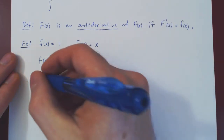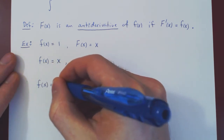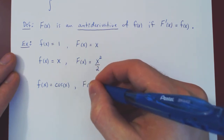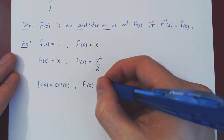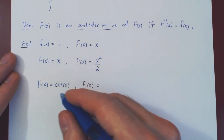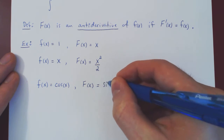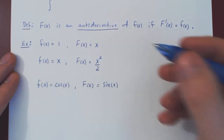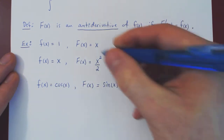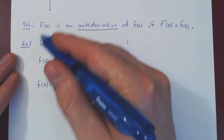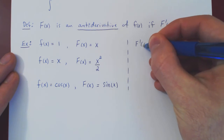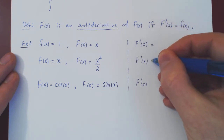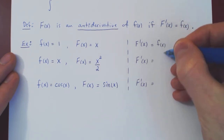Let's look at one more. What if f of x was cosine of x, and we ask for an antiderivative of cosine of x? We are looking for a function whose derivative is cos of x. That is, of course, sine of x, as the derivative of sine of x is cos of x. So in each case, uppercase F is an antiderivative of lowercase f, as the derivative of uppercase F in each case was equal to the original function, lowercase f of x.